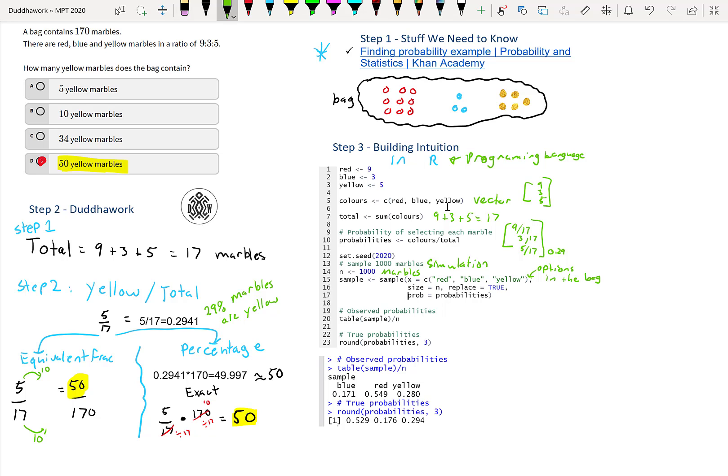What you do is you pick between red, blue and yellow—these are your options in the bag, three types of colors. You pick 1000, that's the size of the bag. Every time you pick one, you replace it. I just assign the probability: for red you have 9 out of 17 chance, for blue you have 3 out of 17 chance, and for yellow you have 5 out of 17 chance. I created a table of probabilities—the amount we actually sampled divided by the total—and checked the true probabilities of each one.